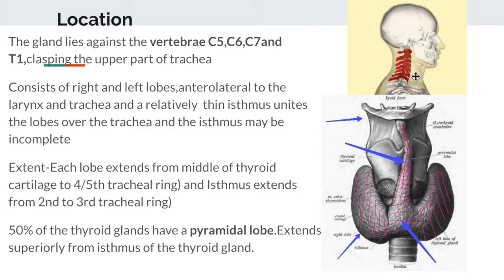To summarize so far: the thyroid gland is a superficial endocrine gland located against C5, C6, C7, and T1 vertebrae, clasping the upper part of the trachea. It is made up of two lobes — the right and the left — which are pyramidal in shape and connected by a narrow isthmus in the middle.